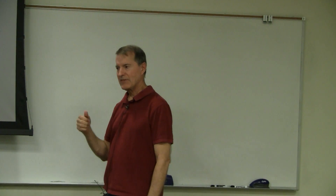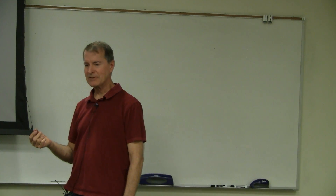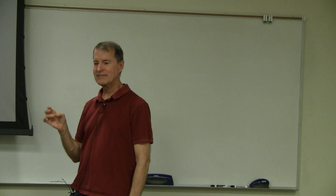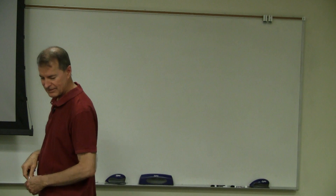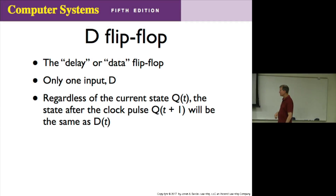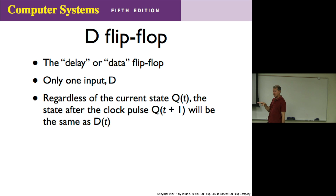Do you remember there are four common flip-flops in sequential design? We've already done the SR and the JK. Now, do you remember what the other two are? D and T. So let's take a look at the D flip-flop. What is its characteristic? The D can either stand for delay or data. If you look at it on a timing diagram you'll see why it's called delay; looking at the circuit it's easier to see why D stands for data.